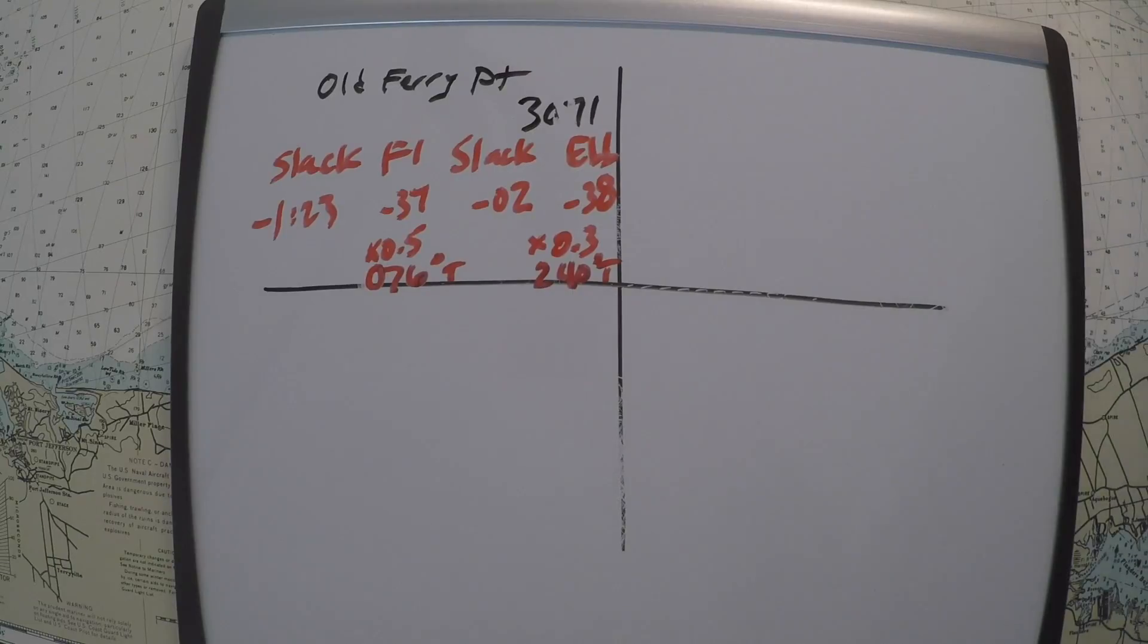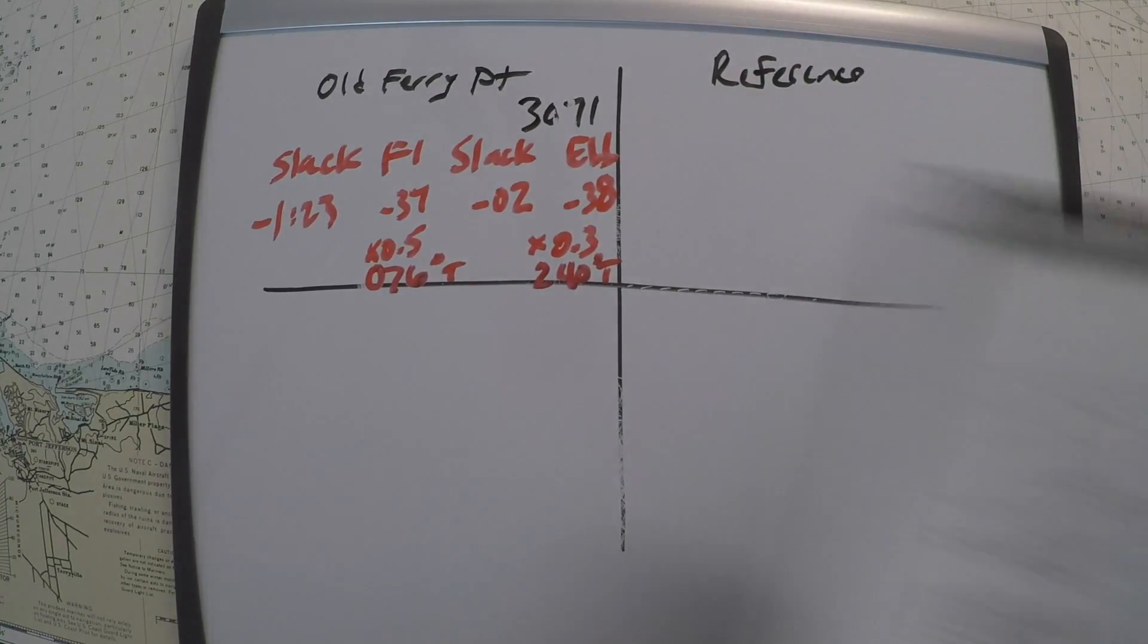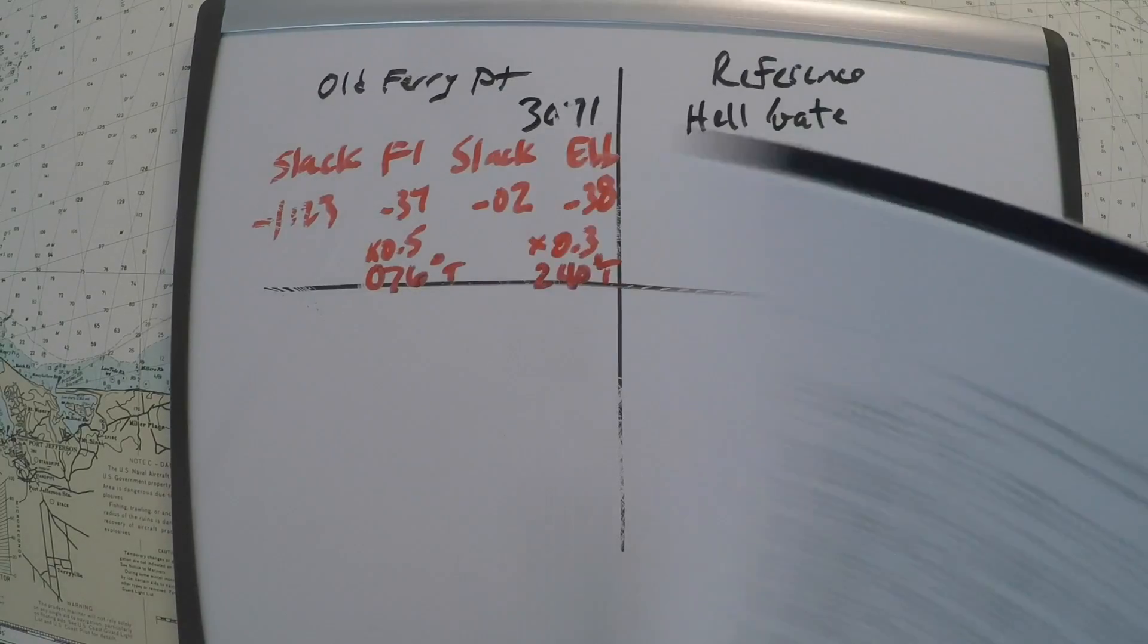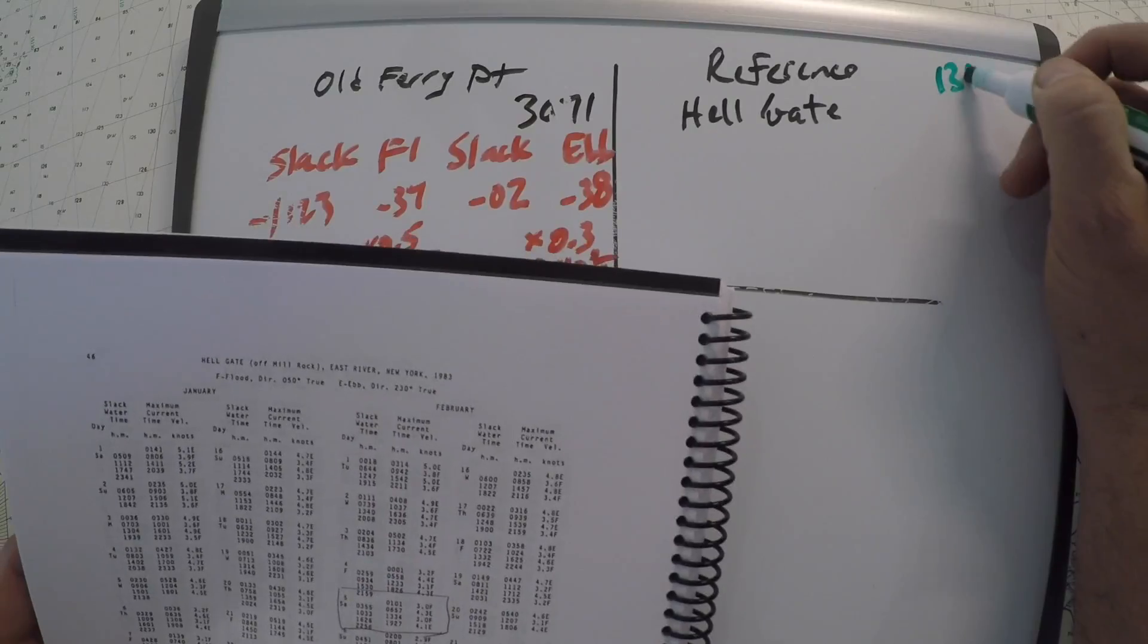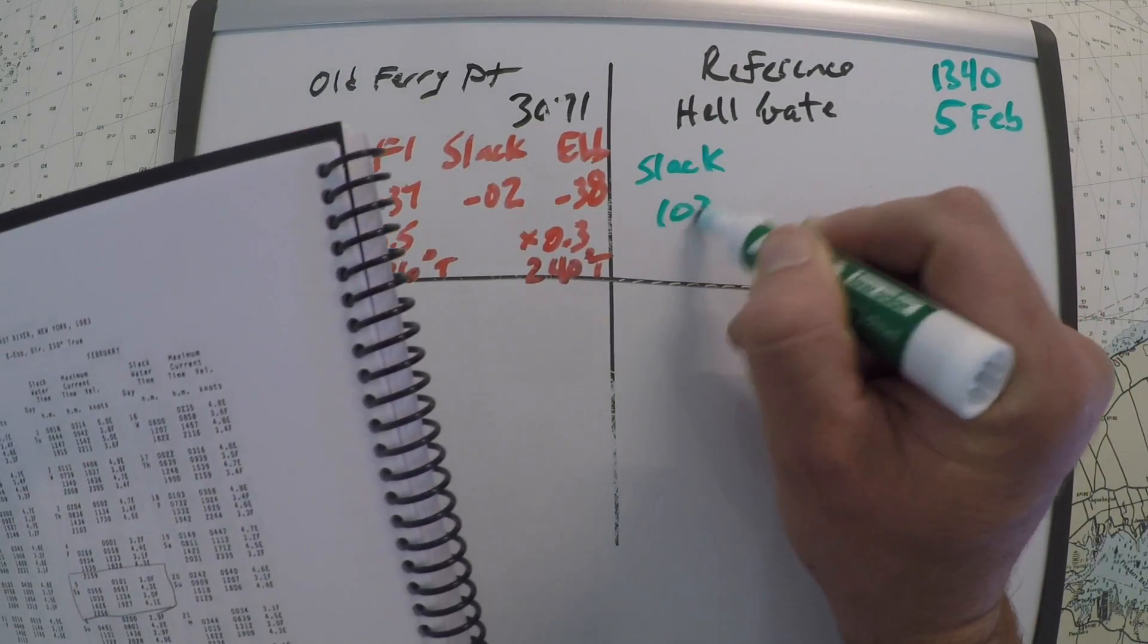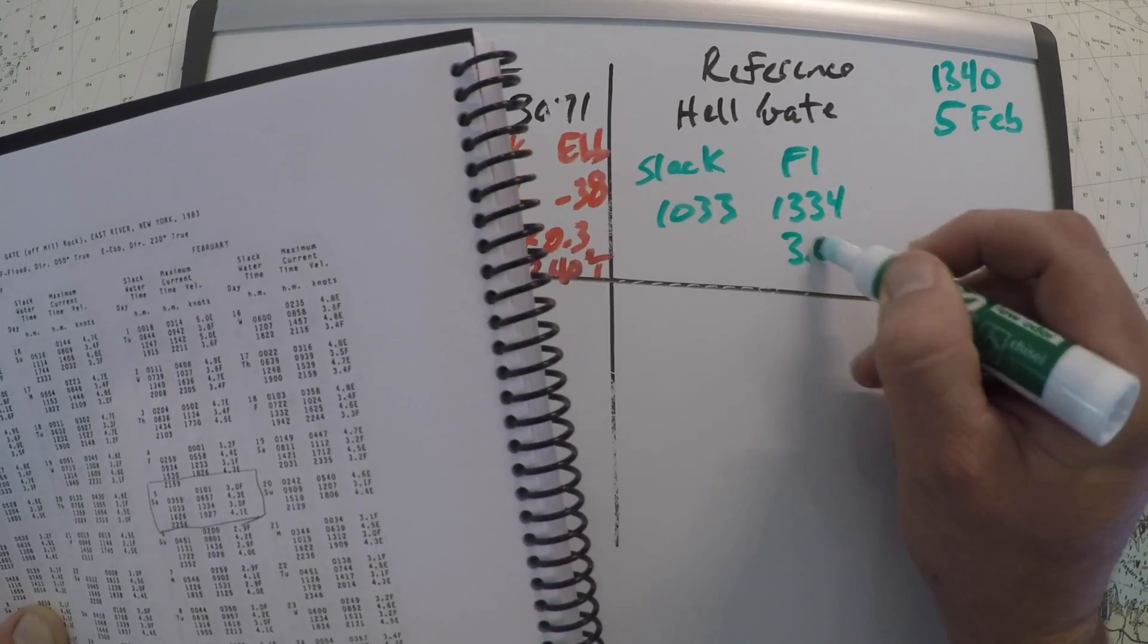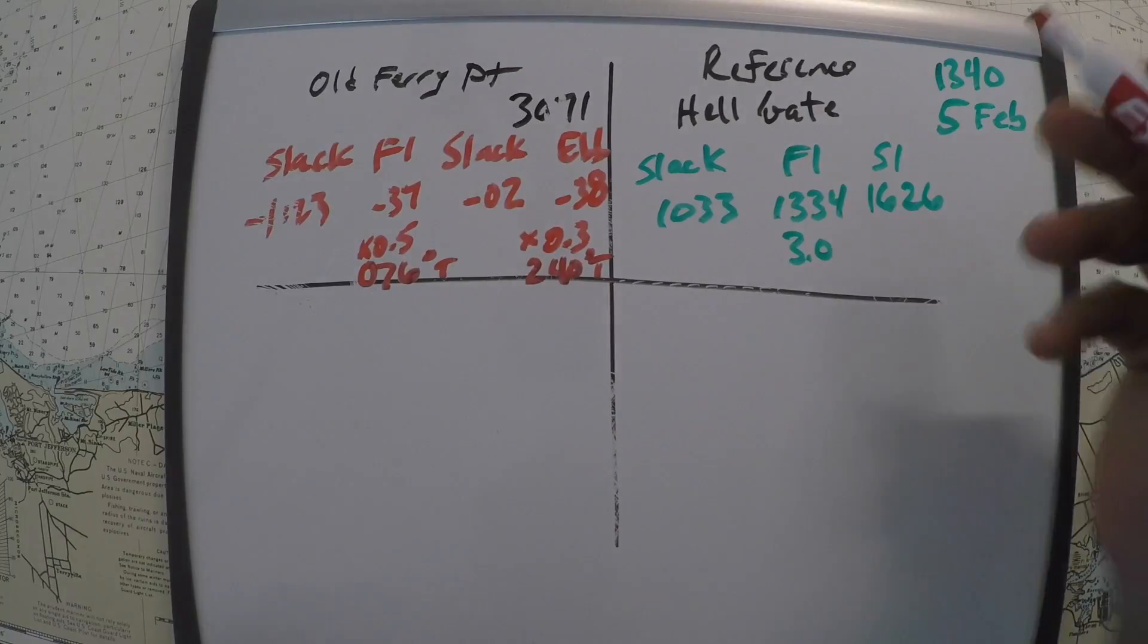All right. So the next step in our strategy is going to be to look for the reference station up here. And in this case, the reference station for Old Ferry Point, if you scroll up, you'll find it. It's Hell Gate. Sounds ominous. So in the tidal current tables, I come to February 5th for Hell Gate, and I'm going to reproduce the times of the slacks and floods here. So we were looking for a time of 1340 on the 5th of February. Around that time, it's not exactly listed. So it looks like there's a slack at 1033. Then a flood at 1334. And that looks like it was 3.0 knots. And then another slack at 1626.